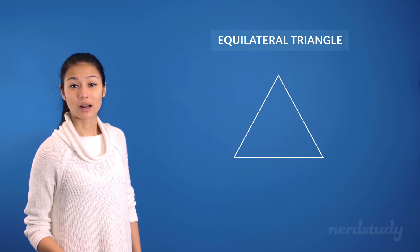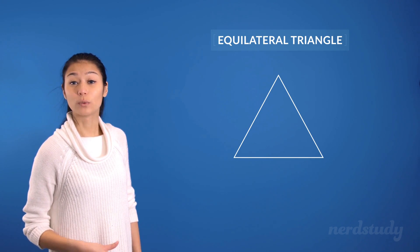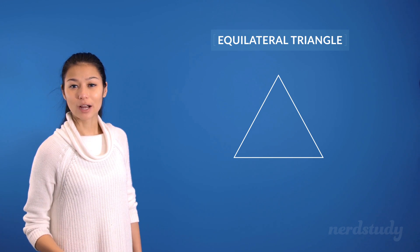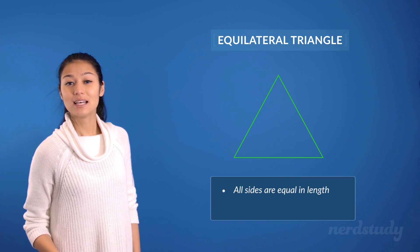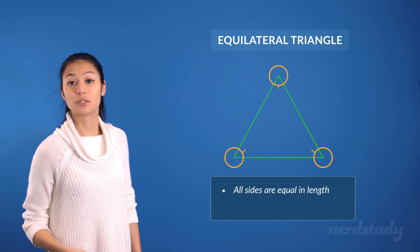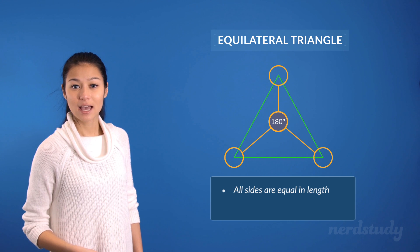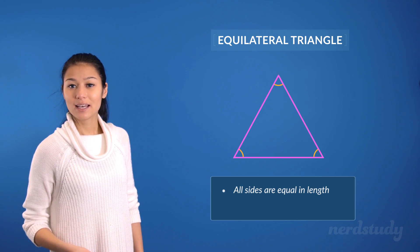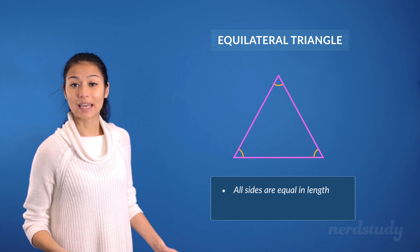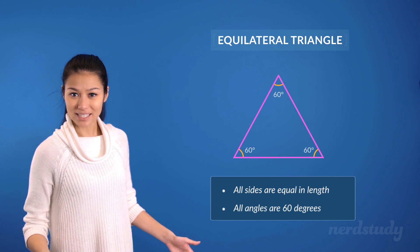Lastly, we have the equilateral triangle as our third type of triangle we can come across. For this triangle, all sides are equal in length. Consequently, since a triangle always adds up to be 180 degrees, and since an equilateral triangle has all equal sides, it also must have equal angles that are always 60 degrees each.